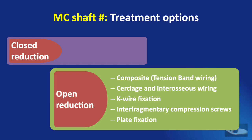We have now seen the different methods of fixation of metacarpal shaft fractures after open reduction: composite wiring, cerclage and intraosseous wiring, K-wire fixation, interfragmentary compression screws, and plate and screw fixation.